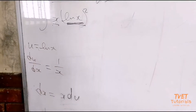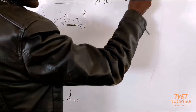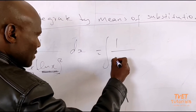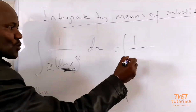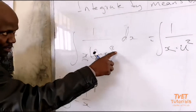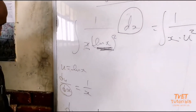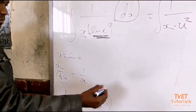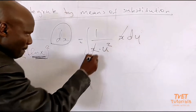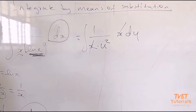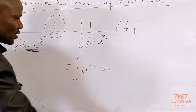You cross multiply to make dx the subject of the formula. Therefore, dx = x · du. Now ln x is u, so it becomes u squared. There is a squared here. For dx, you substitute x · du. Therefore this will cancel that. You rewrite the expression now in terms of du.